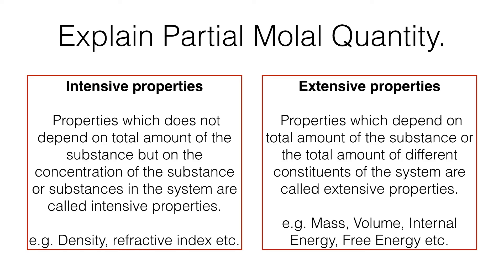There are two types of properties: intensive properties and extensive properties. Properties which do not depend on total amount of the substance but on the concentration of the substance or substances in the system are called intensive properties. For example, density, refractive index - everything depends on concentration not the total amount of the substance.